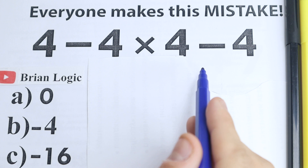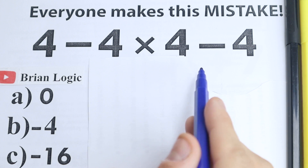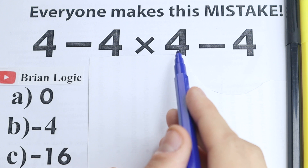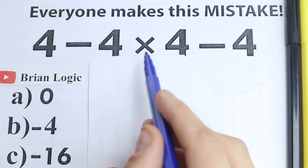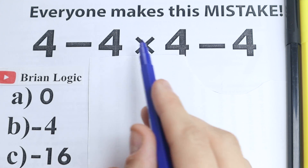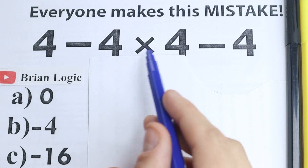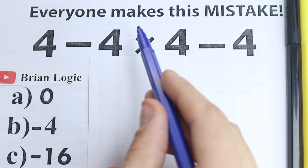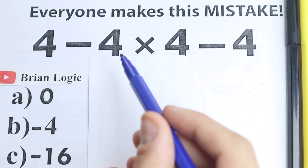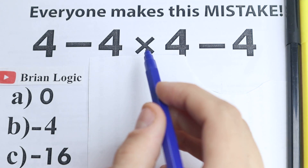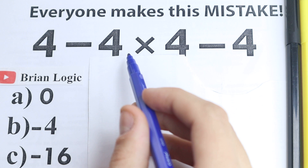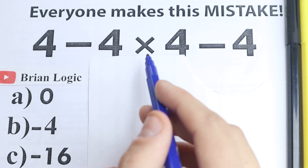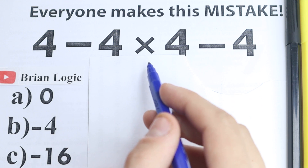On the first sight this looks like the easiest question you've ever seen, because we don't have anything hard — just subtraction and multiplication. Everyone learned this stuff in third grade, everyone knows about these math operations. We have only subtraction and multiplication, no huge complicated expression. But right here, everyone makes this mistake, and I wanted to record this video to help you understand how to solve this correctly.